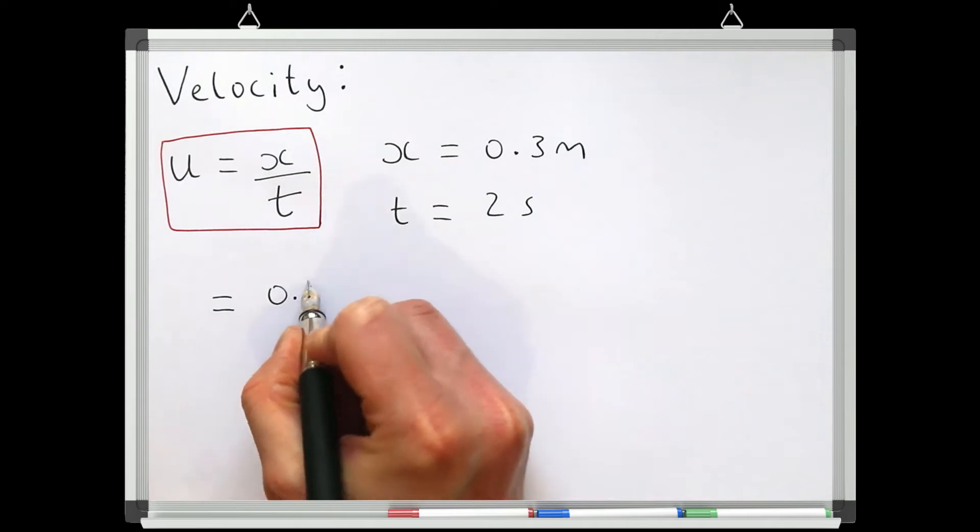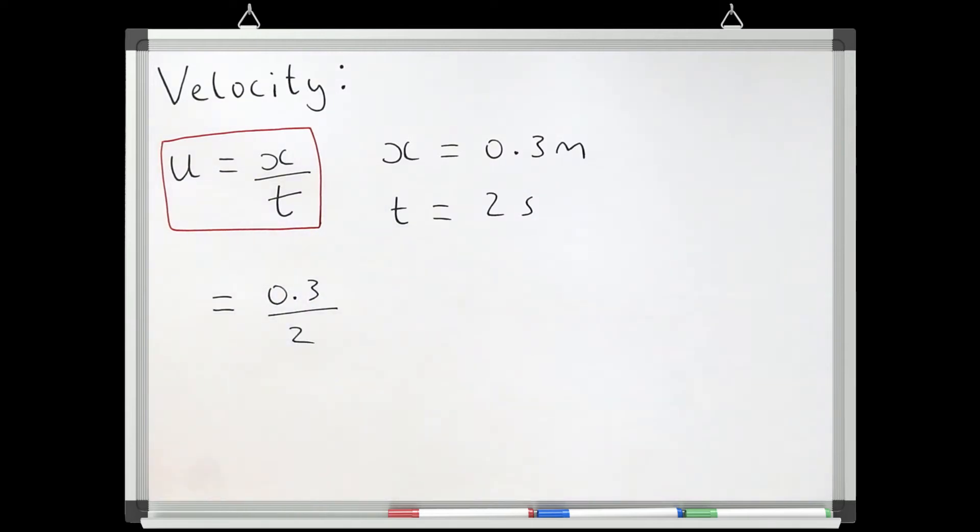by entering these terms into our equation, we get a velocity of 0.15 meters per second. This is not a particularly accurate way to measure the velocity for a flow, and we will discuss why this is the case in later lessons. But it will do for a very crude estimate of the flow's mean velocity to demonstrate the point.